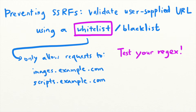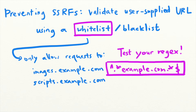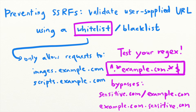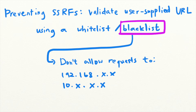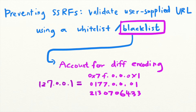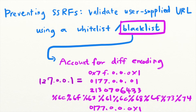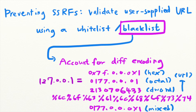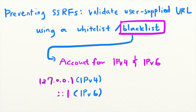Make sure that the regexes you are using are properly designed. For example, a weak regex pattern that simply checks if a URL contains the legitimate domain can be easily bypassed with these URLs. If you are using a blacklist, make sure that you are accounting for different encoding schemes — for example, does your blacklist filter out the same URLs in hex, octal, dotted, URL, and mixed encoding? And does it account for both internal IPv4 and IPv6 addresses?